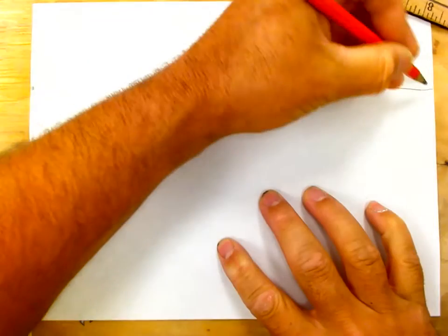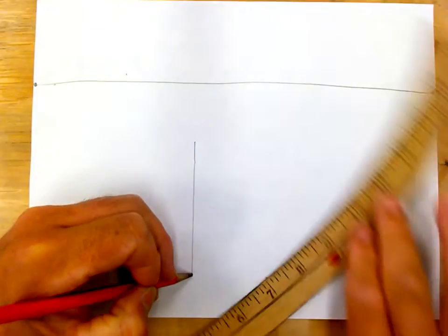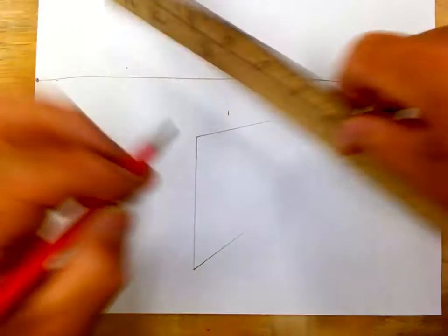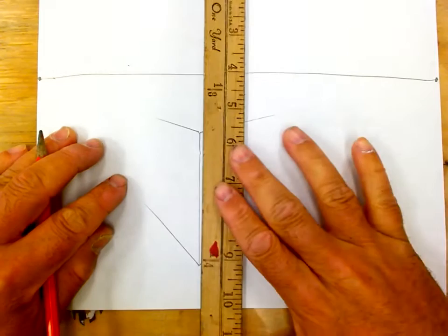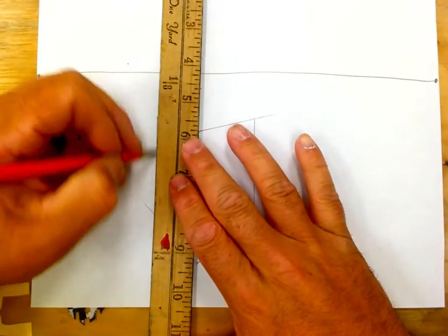Horizon. Box. Vanishing points. Parallel slide, big as you want it. Parallel slide, big as you want it.